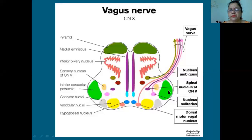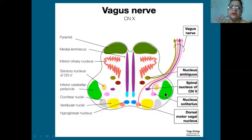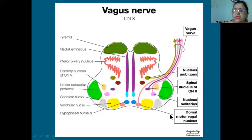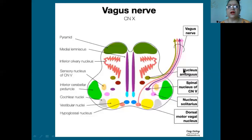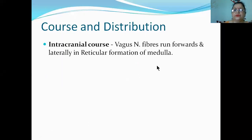What connects to the medulla is called the inferior cerebellar peduncle. The vagus nerve fibers run forwards and laterally in the reticular formation of the medulla, and it emerges as a series of about 10 rootlets between the olivary nucleus and the inferior cerebellar peduncle. It then traverses the posterior cranial fossa, passing laterally along the jugular tubercle along with cranial nerve 9 and 11.